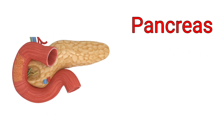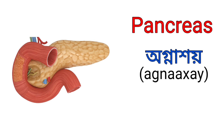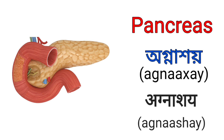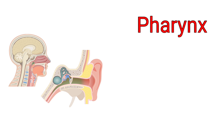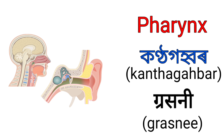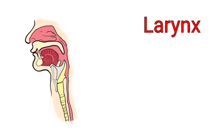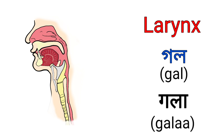Pancreas. It's called Ognakhoi in Assamese and it's called Agnasai in Hindi. Pharynx. It's called Konkal in Assamese and it's called Grasni in Hindi. Larynx. It's called Gol in Assamese — that means Kanthanuli — and it's called Gala in Hindi, that means Kanthanuli.